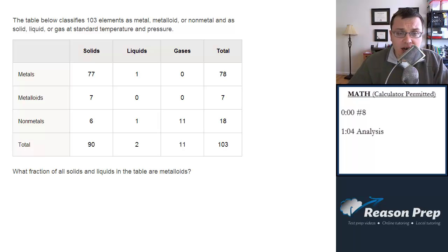The table below classifies 103 elements as metal, metalloid, or nonmetal, and as solid, liquid, or gas at standard temperature and pressure. What fraction of all solids and liquids in the table are metalloids?